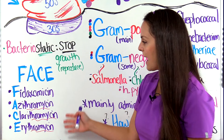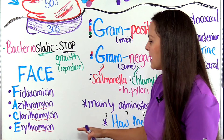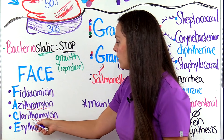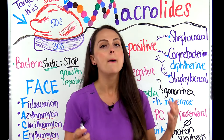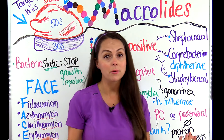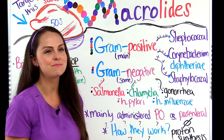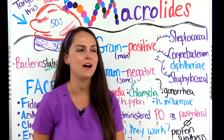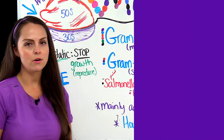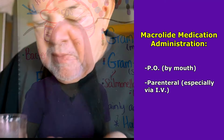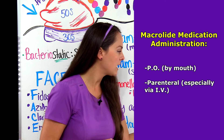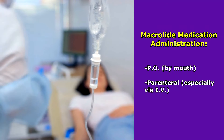Notice that those last three, which have been in the group for a really long time, end in 'thromycin' — so we have the 'mycin' here and we're dealing with macrolide. Hopefully that can help you remember that whenever you're looking at your patient's med. Now, how can you expect to administer these to a patient? They're absorbed fairly well in the gut, so we can give them orally, or in severe cases parenterally, mainly the IV route.